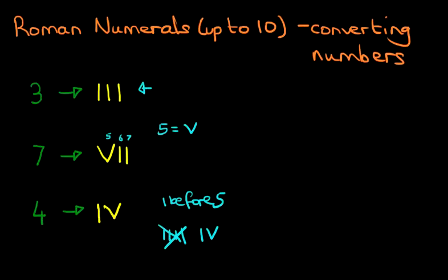Whenever you see an I, it's always 1 before. So it is 1 before 5 is 4. We can even write this down just to make sure that we understand it. It is 1 before 5. 1 before 5 is 4. So that is how we convert numbers into Roman numerals.